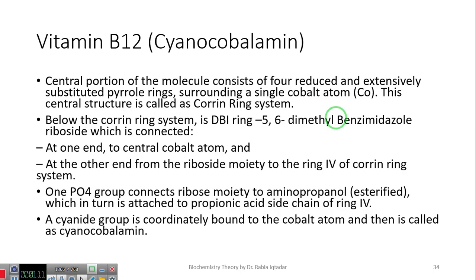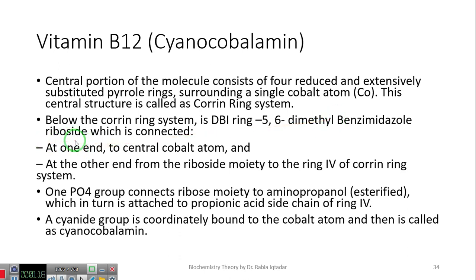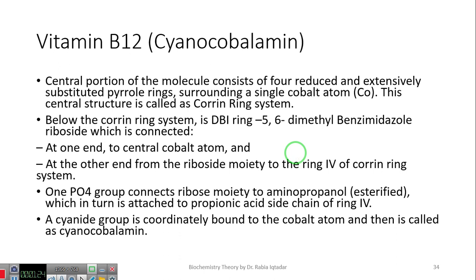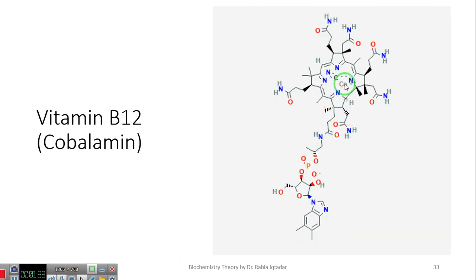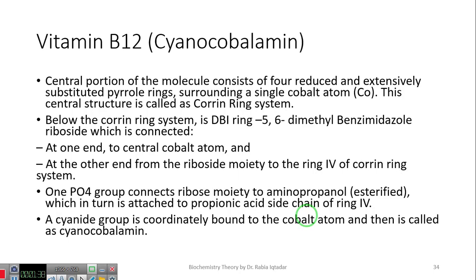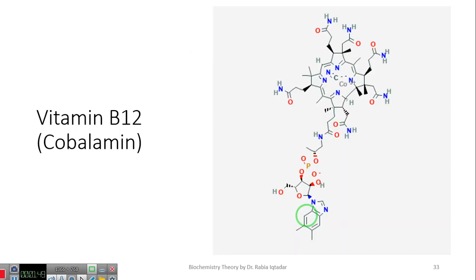After dimethylbenzimidazole, next we have a structure which is called riboside. This portion of cobalamin molecule is called riboside. The DBI ring is attached from one end to the central cobalt atom, and on the other side it is attached to riboside. One phosphate group connects ribose moiety to aminopropanol, which is esterified, which in turn is attached to propionic acid side chain of ring four.